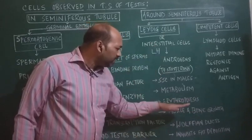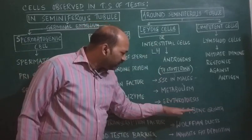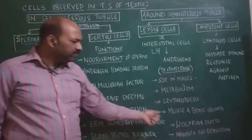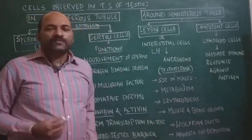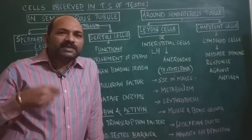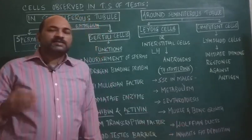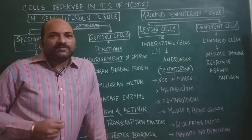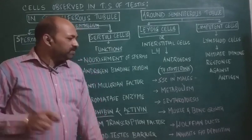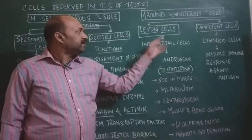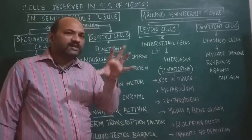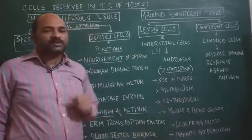Androgens are necessary for muscle and bone growth and development. Androgens also stimulate the formation of Wolffian ducts, which are important during embryonic life and later transform into the epididymis, vas deferens, and seminal vesicles. Formation of these accessory ducts and glands depends completely on androgens secreted by the Leydig cells. Additionally, Leydig cells act upon fat cells and inhibit fat deposition in those cells.